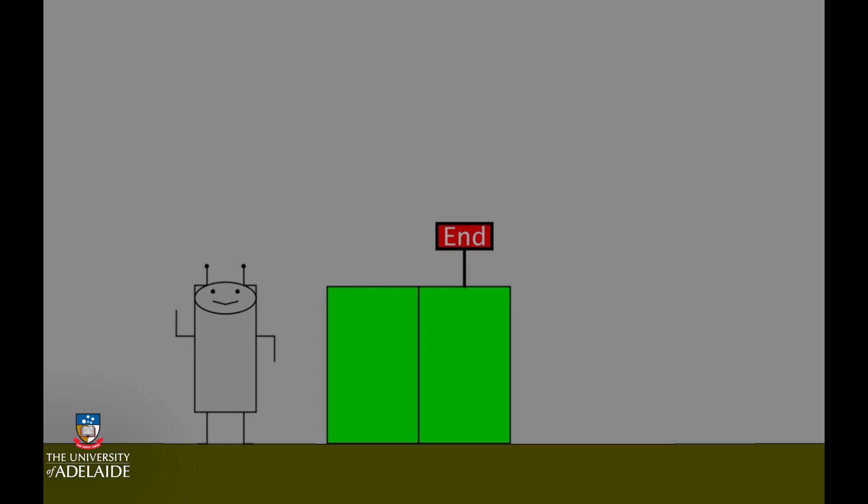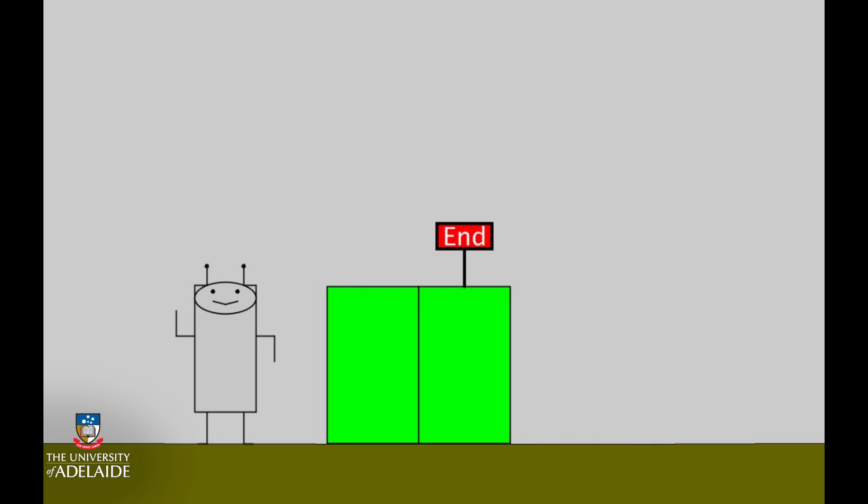Consider the robot in the drawing. In order to get on top of the first step, the robot has to jump, then walk forward, to reach the end destination.